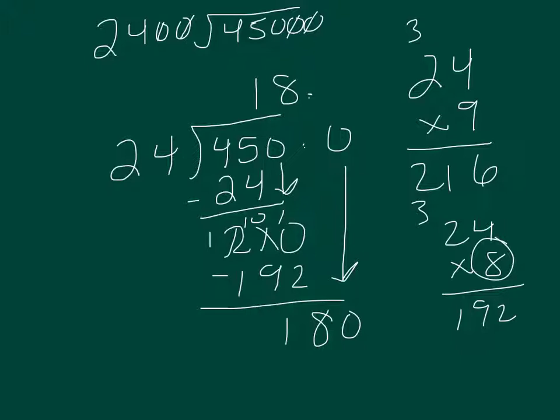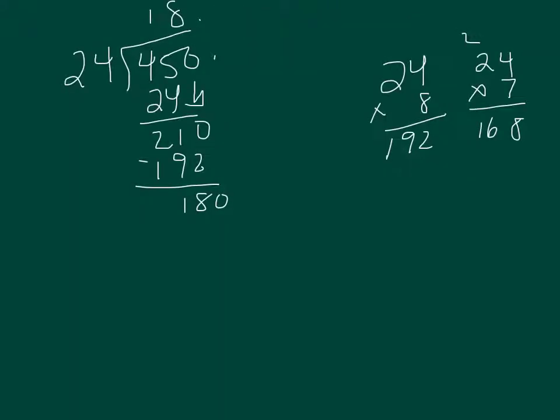So 2 goes into 18 nine times. I'm going to do 24 times 8 and do my math and see what I get. I've already done my work for the 24 times 8, and that's when I need 2, so that's too big. So I'm going to do my work and do 24 times 7, which comes out with 168. So that's the one that I'm going to use up here. All right, 168. I'm going to borrow and subtract, and that leaves me with 12.